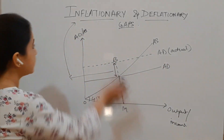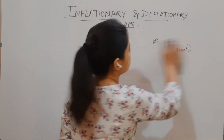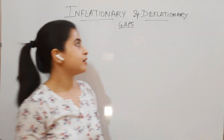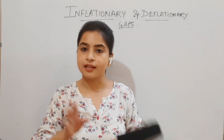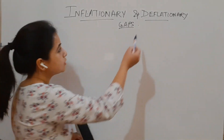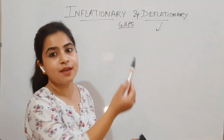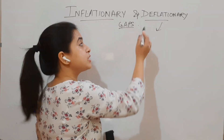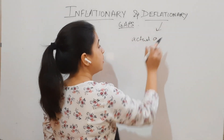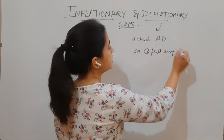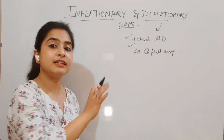I hope the diagrammatic explanations are helpful, and I hope you are making a note. You can take a screenshot and revisit it later. Now moving on to the deflationary gap in macroeconomics — it is the reverse of the inflationary gap. This deflationary gap is also a gap between the actual aggregate demand and the aggregate supply at the full employment level, but the definition changes.